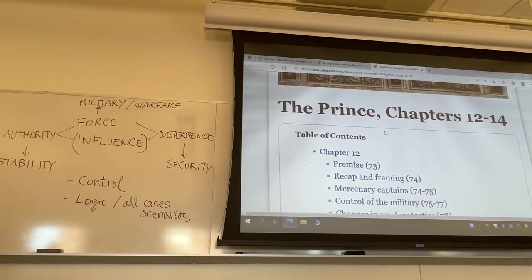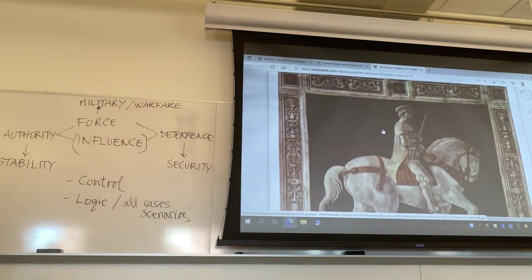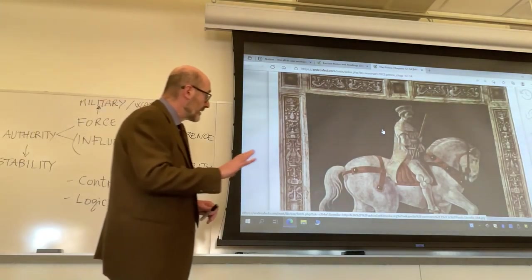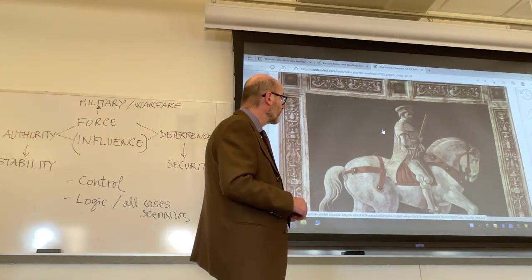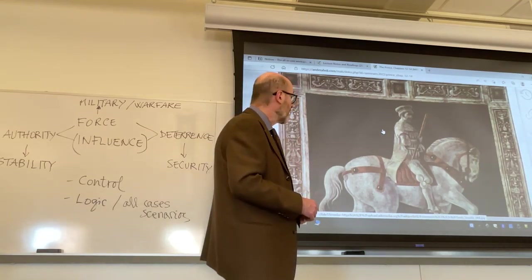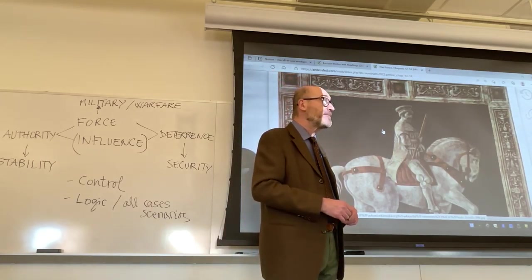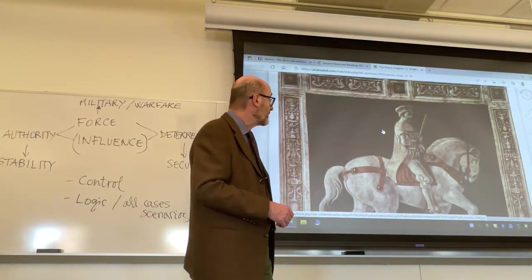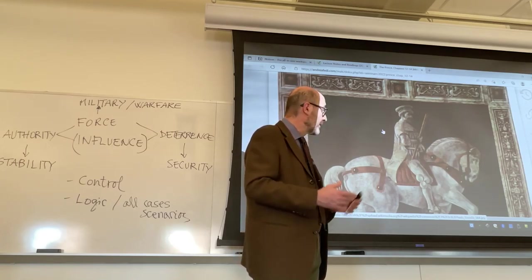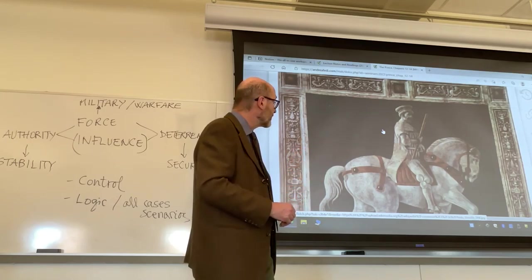This is the page I created, linked under week 11, with passages, summaries, and ideas from chapters 12 through 14. The image I picked to open this page is a famous fresco in the Duomo in Florence — the portrait of Giovanni Acuto by 15th-century painter Paolo Uccello, made around 1436.